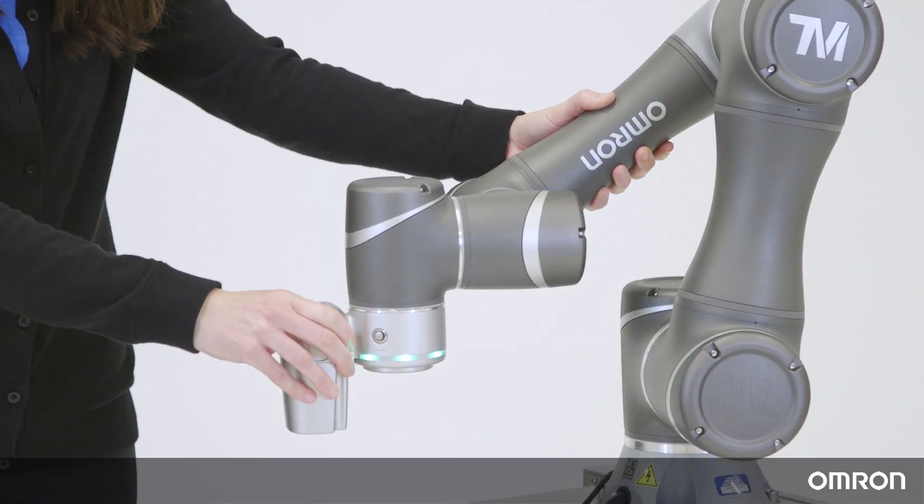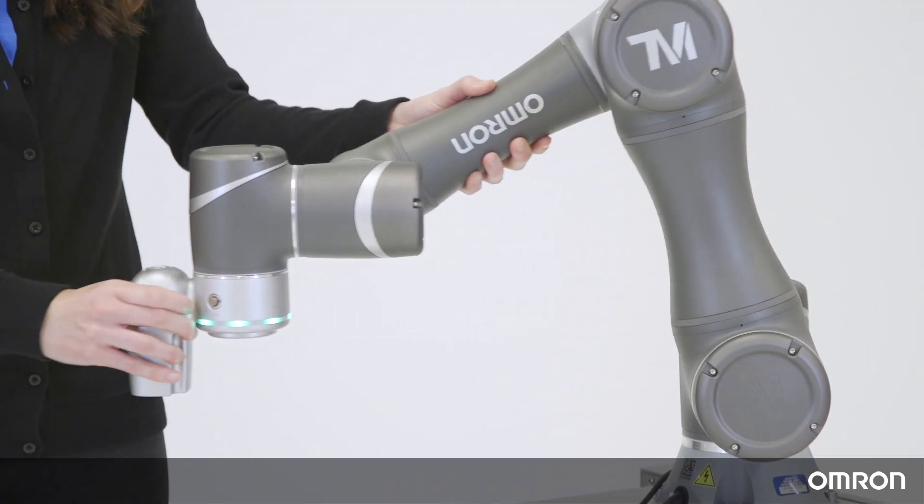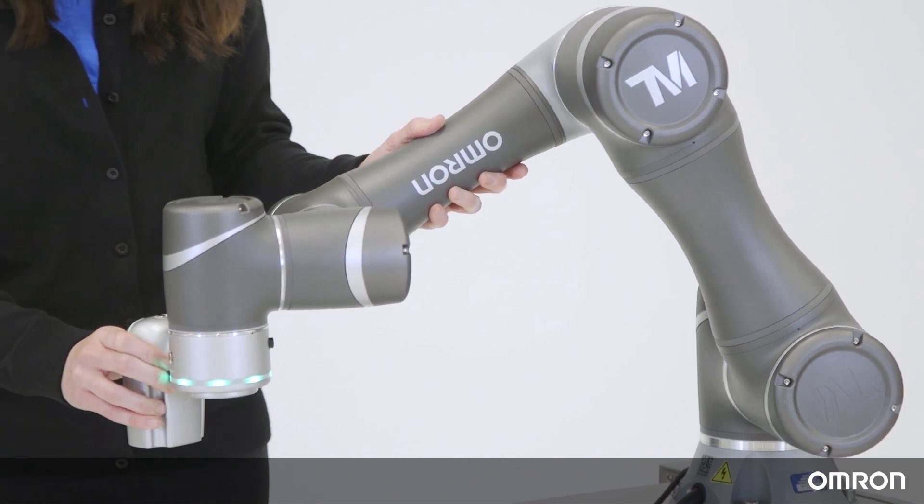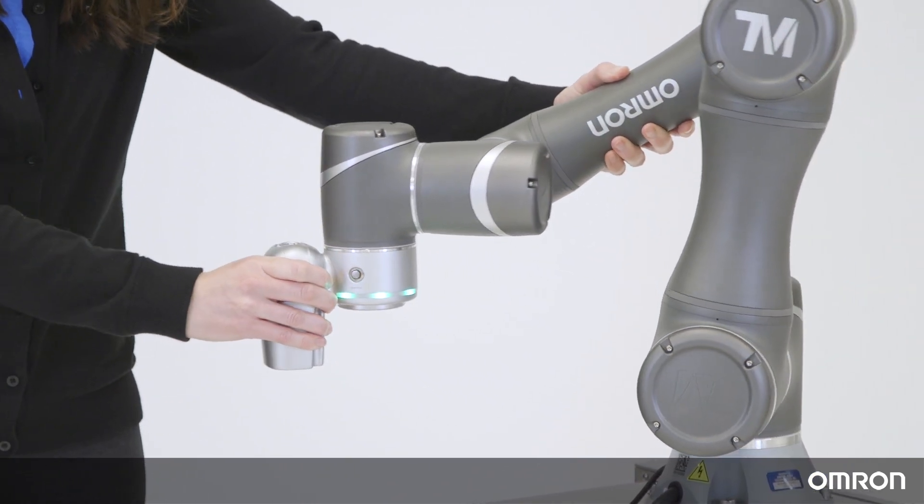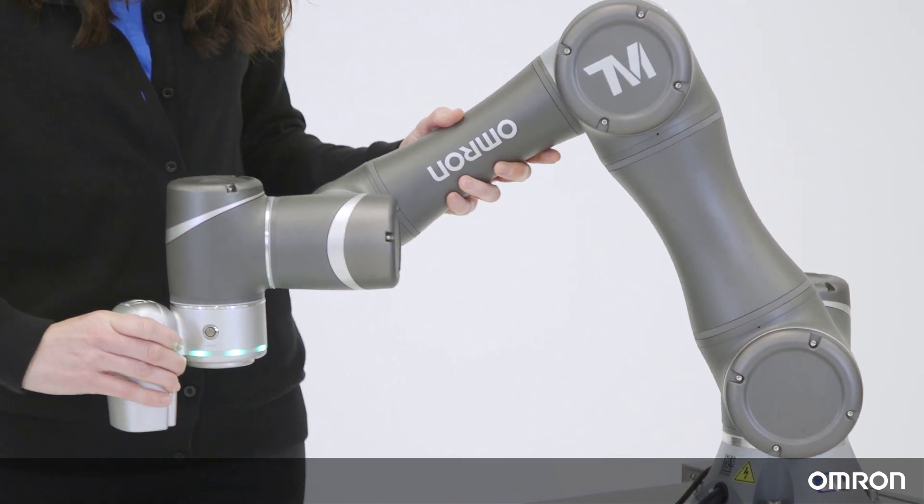This will restrict the motion to only 4 axes of motion to imitate the movements of a SCARA robot. Depending on your application, you can enable and disable any joints or axes, making your job to teach the cobot that much easier.